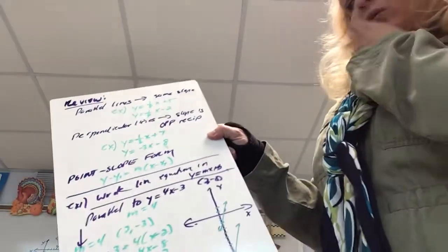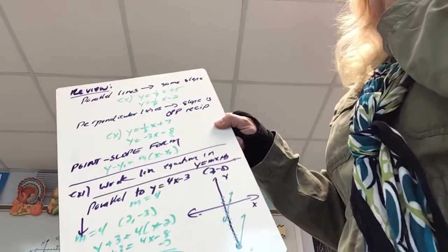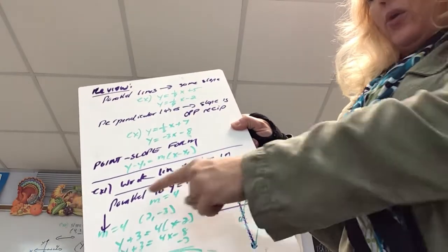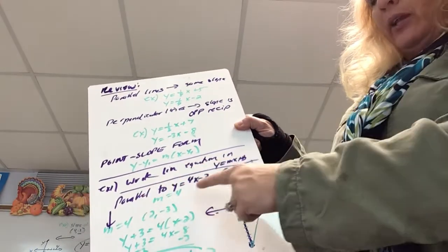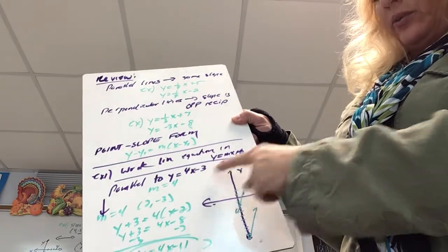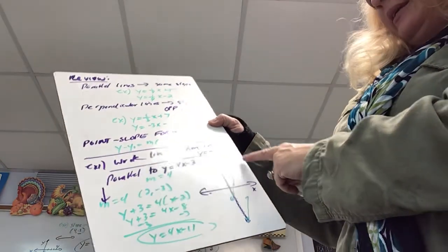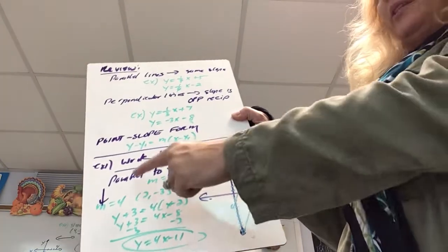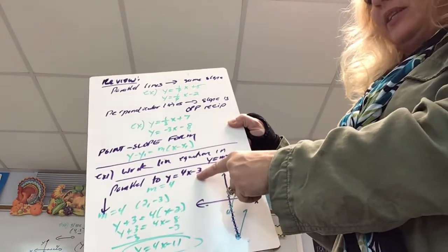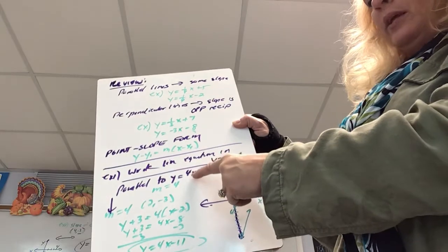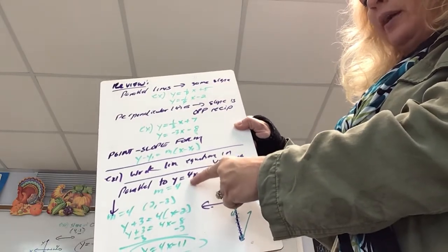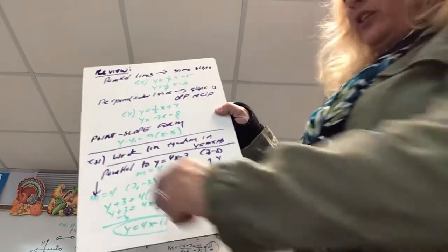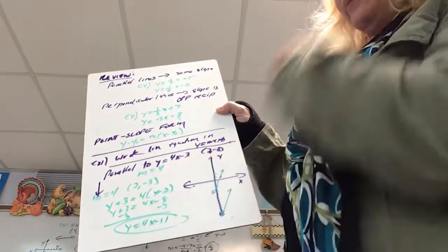Let's go through example one. Write the linear equation in slope-intercept form given this condition: parallel to y equals 4x minus 3 and going through the point (2, negative 3). If I want it to be parallel to this line, it must have the same slope. The slope of that line is 4, so the slope we need is 4. We have slope and a point.